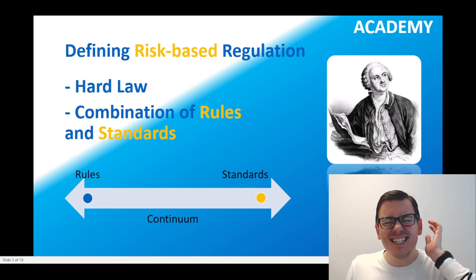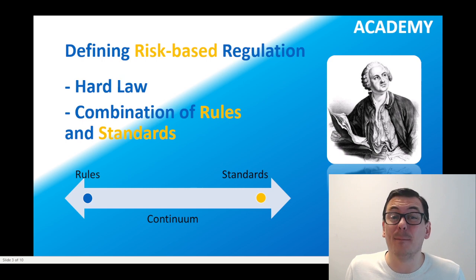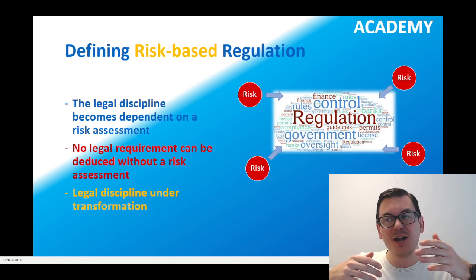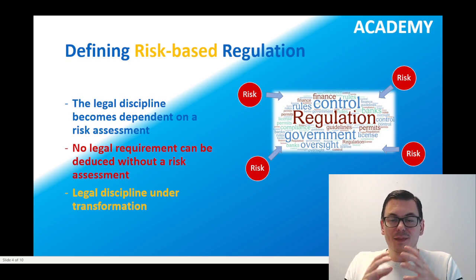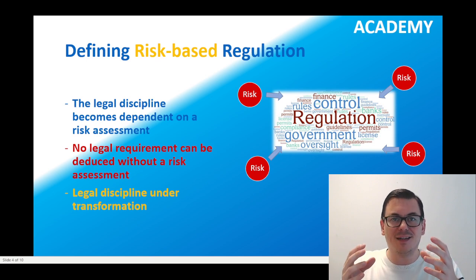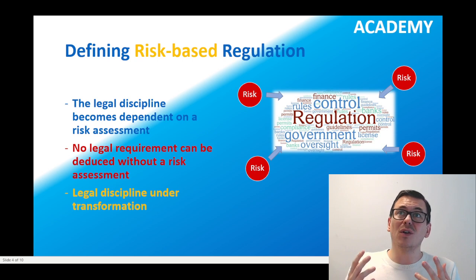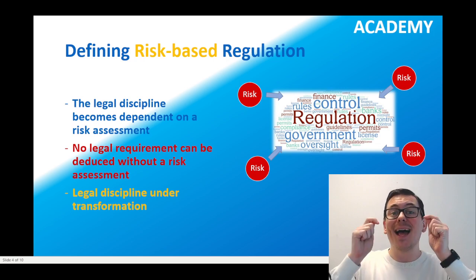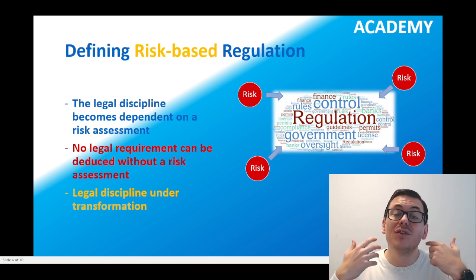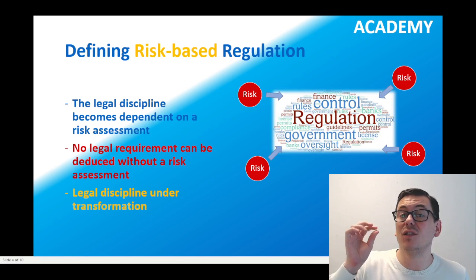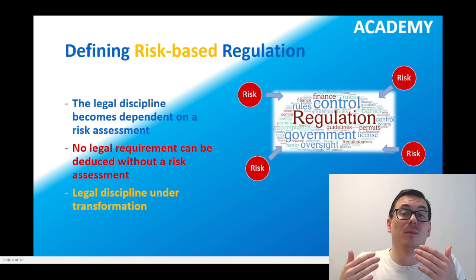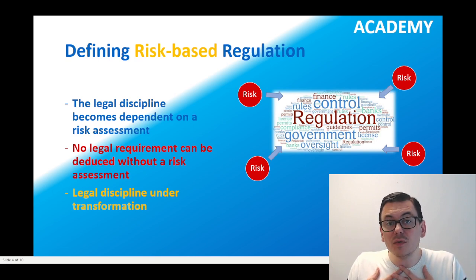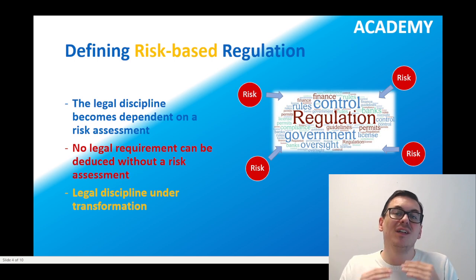What is significant about this type of regulation is that it is risk-based. What does that mean? It means that the legal discipline suddenly becomes dependent on another element, which is a risk assessment. In a practical problem setting, you cannot just read the law and say the law requires me to do this. When regulation becomes risk-based and thereby depends on a risk assessment, you have to conduct a risk assessment first before you can deduce from the legal text what your requirements are. We have to know what is the risk picture, what is our risk exposure, to know how we should act and what the legislation says.